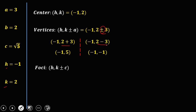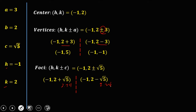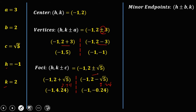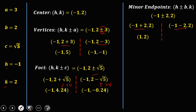For the foci, use (h, k ± c): h = -1, k = 2, and c = √5 ≈ 2.24. So 2 + 2.24 = 4.24 and 2 - 2.24 = -0.24. The foci are (-1, 4.24) and (-1, -0.24). For the minor endpoints, use (h ± b, k): -1 ± 2 with k = 2, giving (1, 2) and (-3, 2).